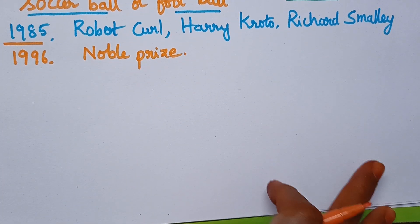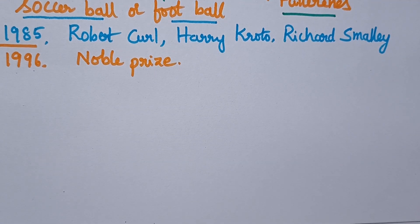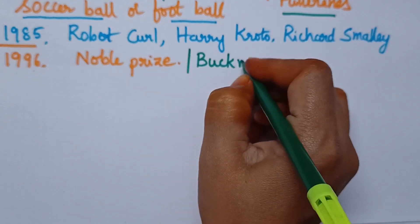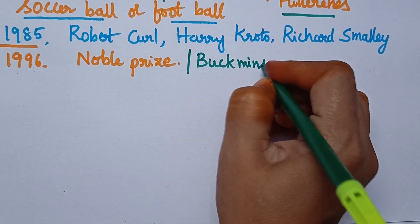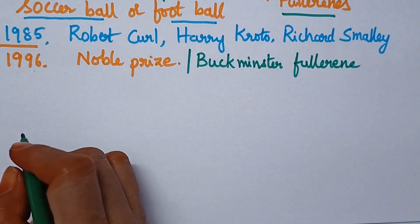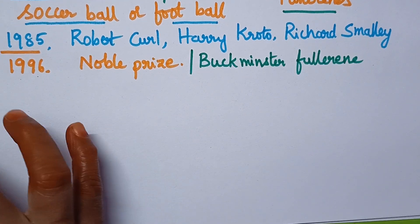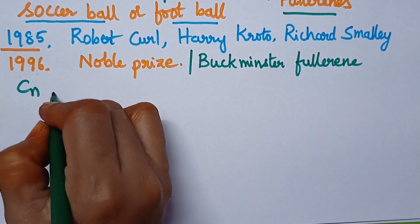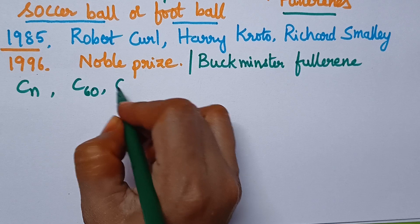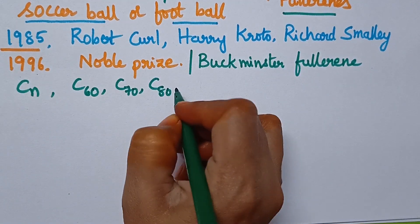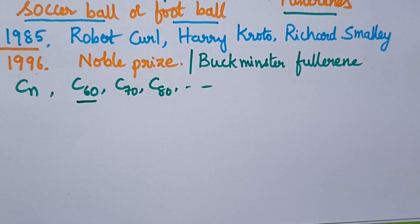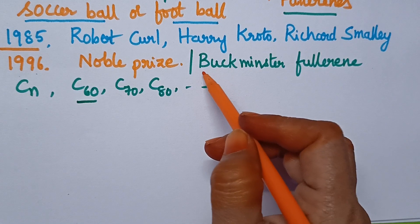The first member of fullerenes is called Buckminster Fullerene. These fullerenes consist of the general formula Cn and include compounds such as C60, C70, C80, etc. C60 fullerene is the first member and is called Buckminster Fullerene.